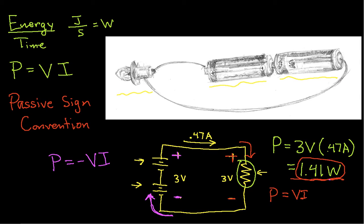So looking at the batteries, if I were to actually continue working this example, I have minus 3 volts times 0.47 amps, and this gives me minus 1.41 watts. What the negative sign means is that the batteries are supplying power to the rest of the circuit.